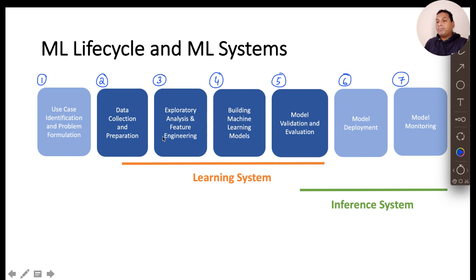So steps 3, 4 and 5 are typically accomplished on the learning system. Some part of data collection preparation is also done on the learning system. Whereas mostly the model deployment and monitoring is done on the inference system. And some part of model evaluation can also be done on the inference system like online evaluation. When you come to evaluation, we will discuss about that as well.